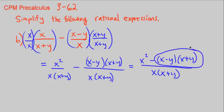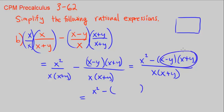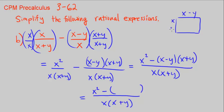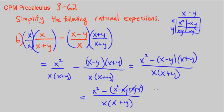Before we say we're done, let's multiply out the binomials using the box method. We're distributing x minus y over x plus y: x times x is x squared, x times negative y is negative xy, x times y is xy, and negative y times y is negative y squared. So we have x squared minus xy plus xy minus y squared — the xy terms cancel, leaving x squared minus y squared.